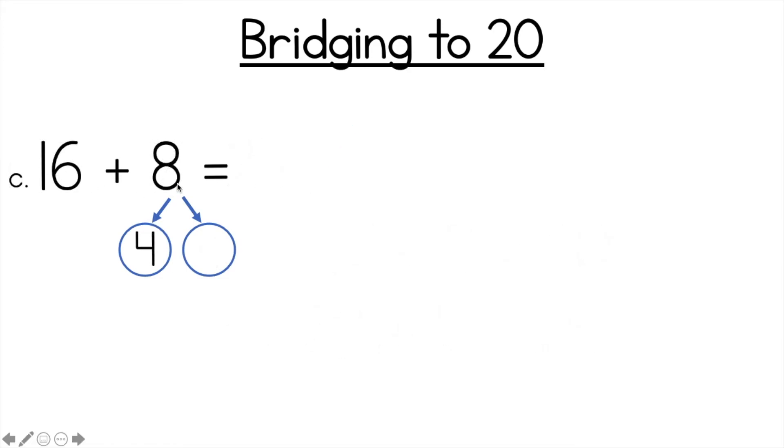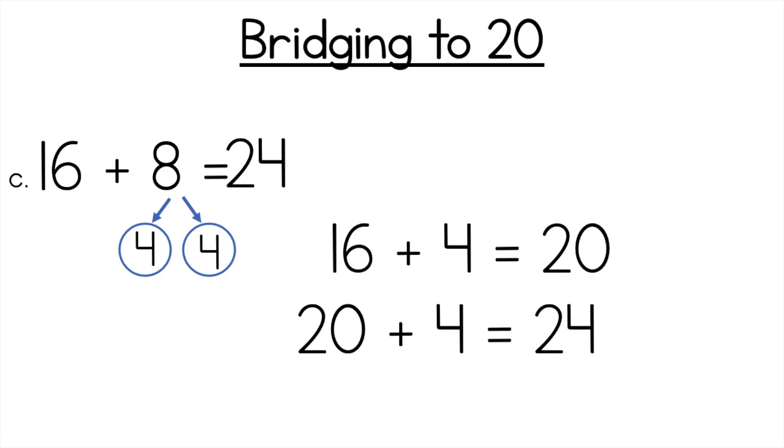C. 16 plus 8. And I know that the friend of 20 of 16 is 4. 4 plus what is 8? I can actually use my doubles to solve this one. 4 plus 4 is 8. So 16 plus 4 is 20 and then you gotta add the last number. 20 plus 4 is 24. All right. If you did it that way give yourself a big tick.